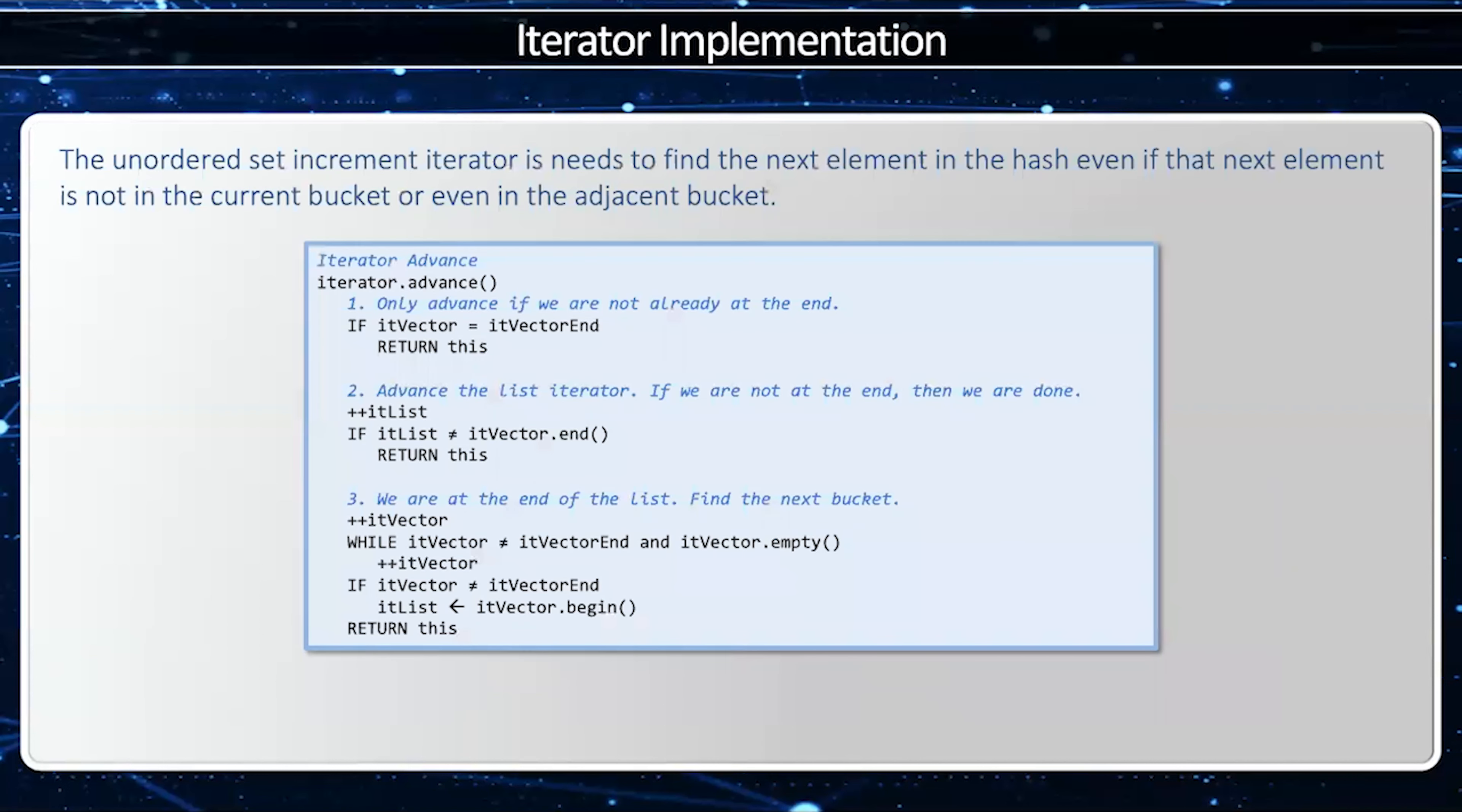The most complicated part of this is the advance function in the iterator and there are three cases. Case number one is if I'm at the end of the vector then I just end. I don't want to advance past that point. Case number two, if I'm within a list but I'm not at the end then I just advance my list iterator.